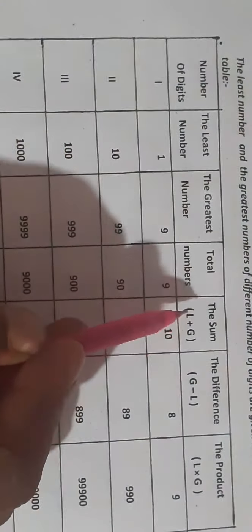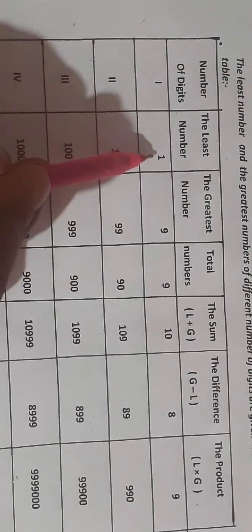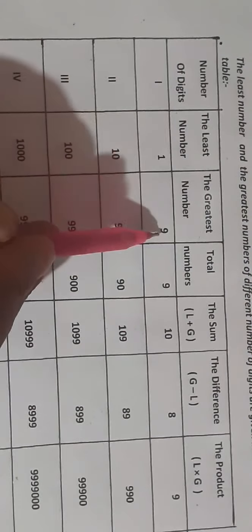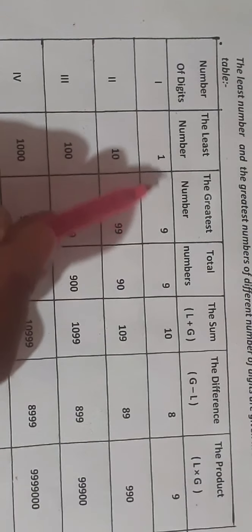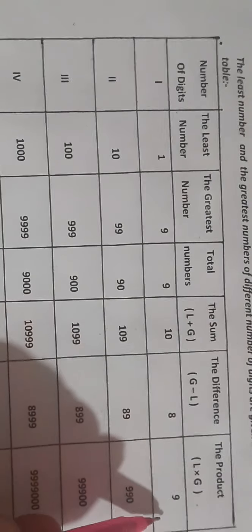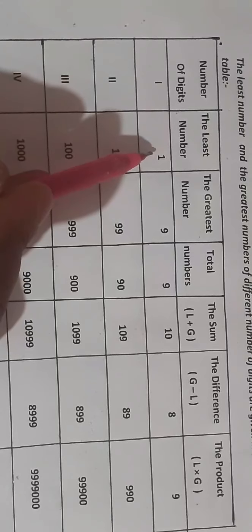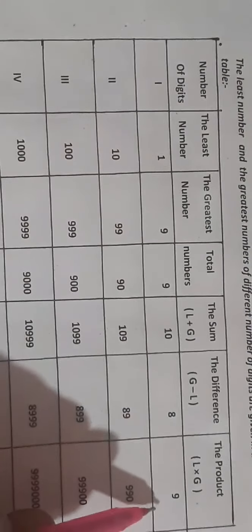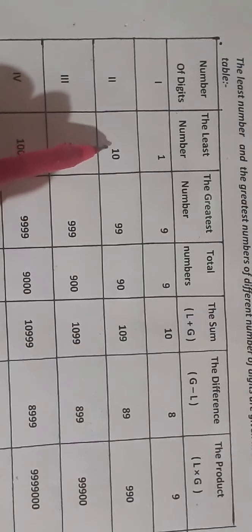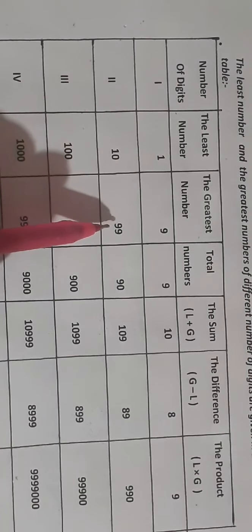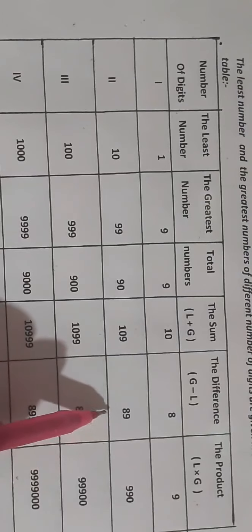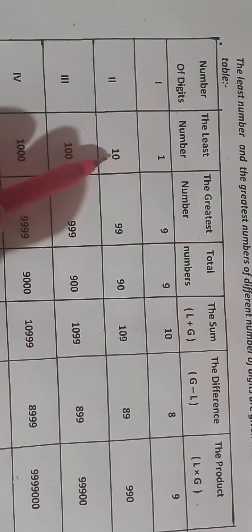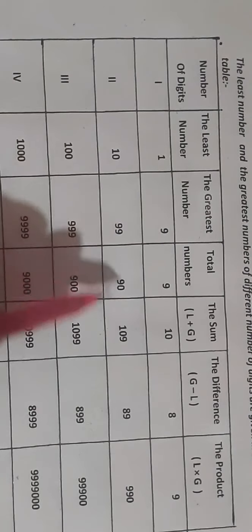Here I will show you L plus G — that is the sum of the least number and greatest number. L stands for least, G stands for greatest. For single-digit numbers: least is 1, greatest is 9. 1 plus 9 equals 10. The difference is 9 minus 1 equals 8. The product is L into G. For double-digit numbers: least is 10, greatest is 99. The difference is 99 minus 10 equals 89. The product is 99 into 10 equals 990.